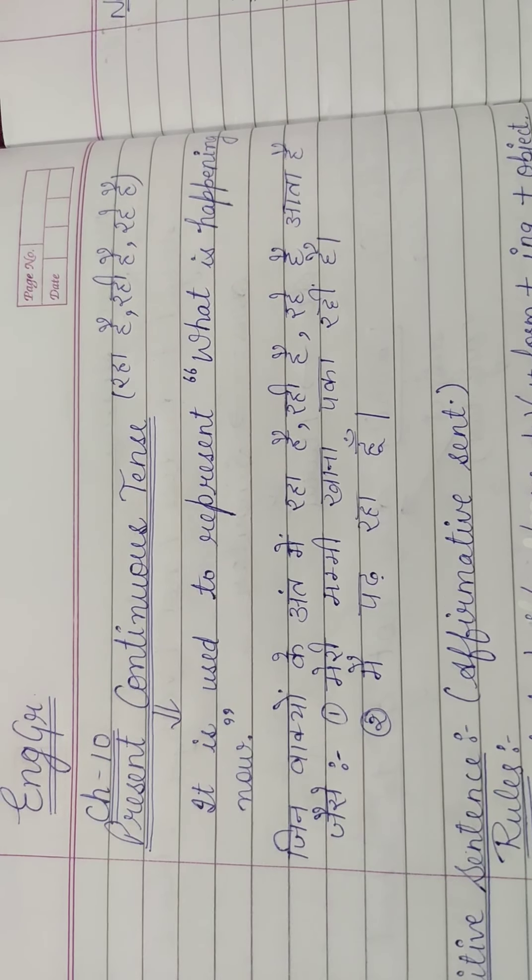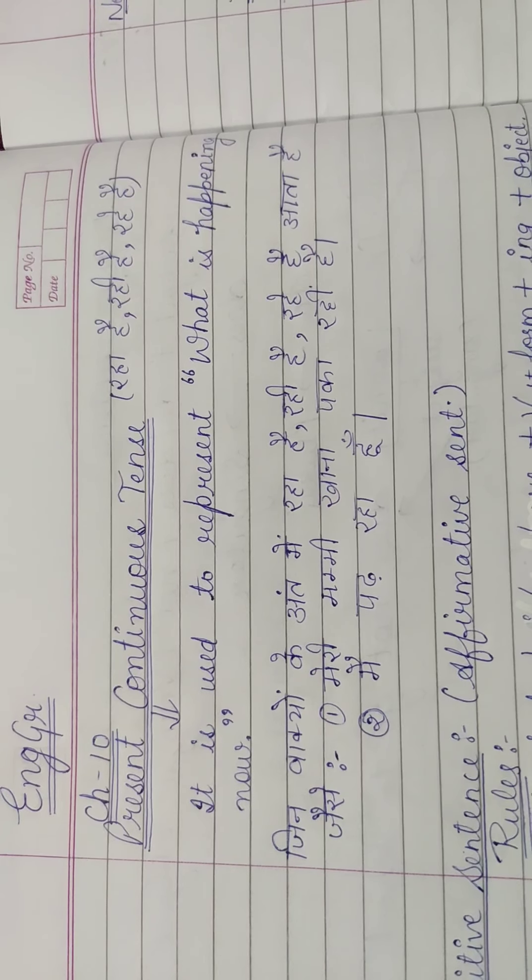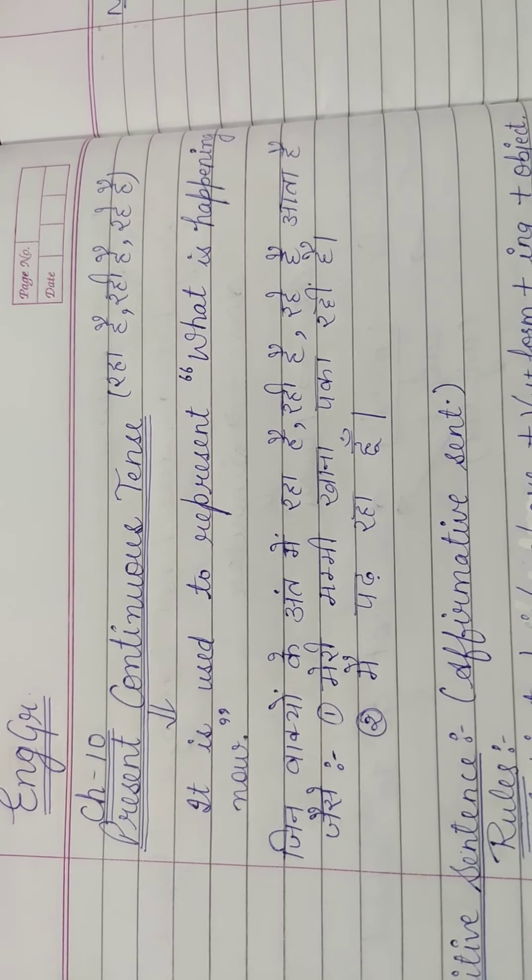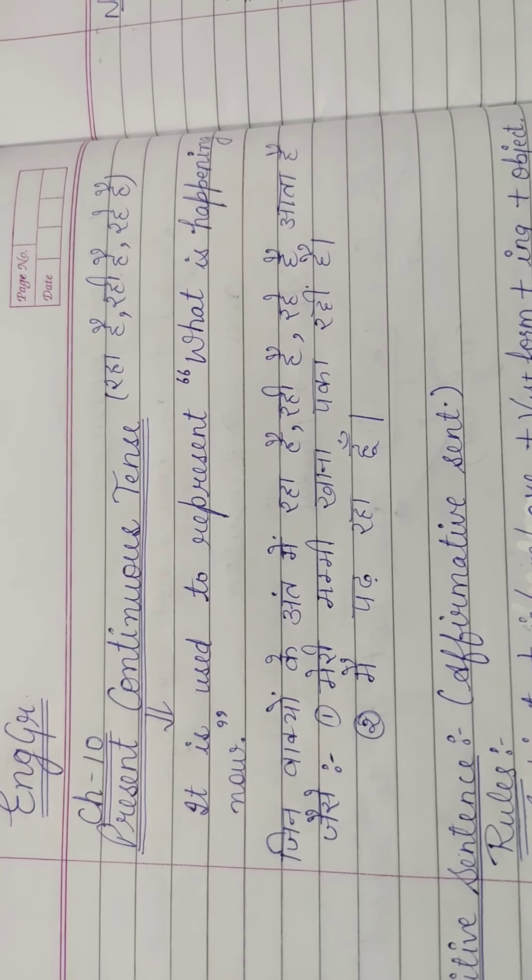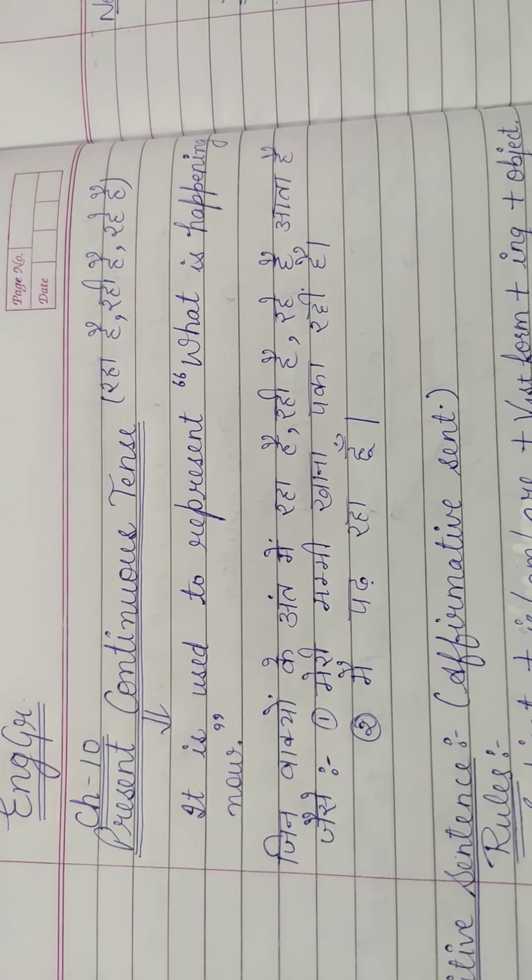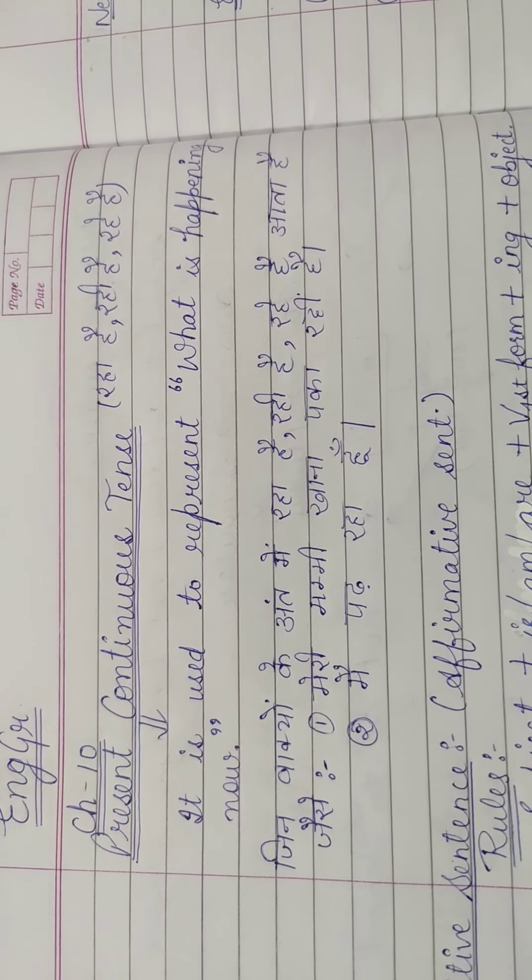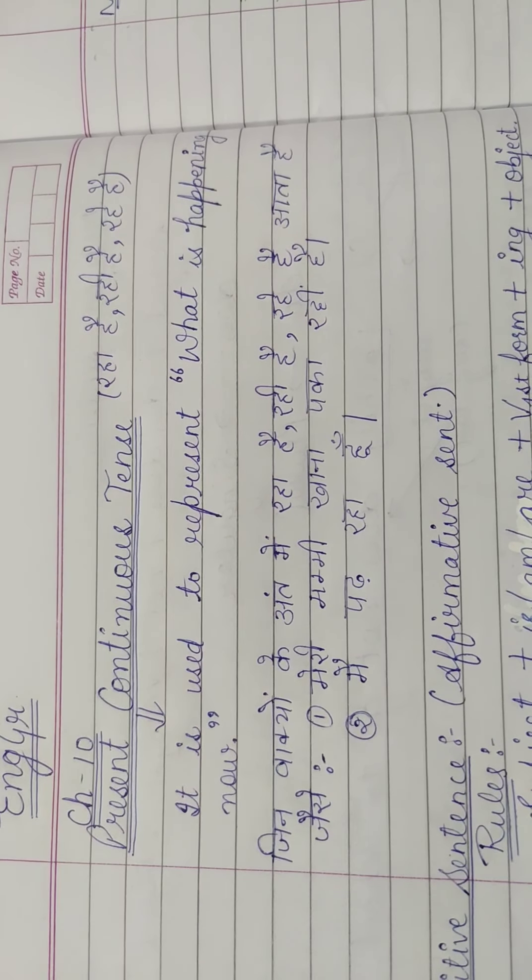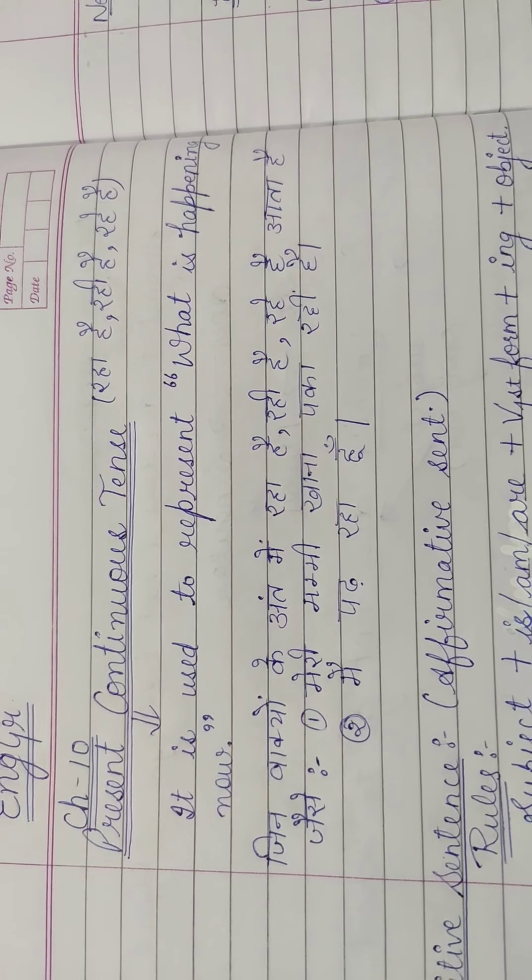In the previous video, we had simple present tense, which we also called present indefinite tense. And we had learned that tense has three types: present, past and future. We have done the first kind of present tense, that is simple present tense. Today, we will do present continuous tense.